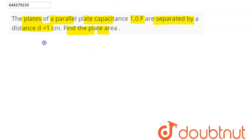So we can say here the plate area A can be written here as C into d divided by epsilon not.